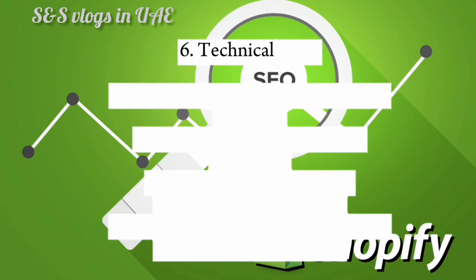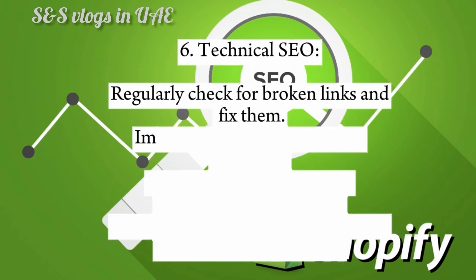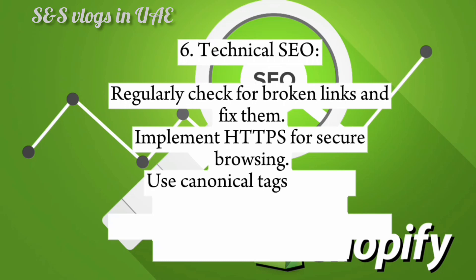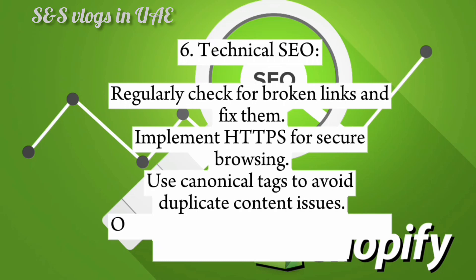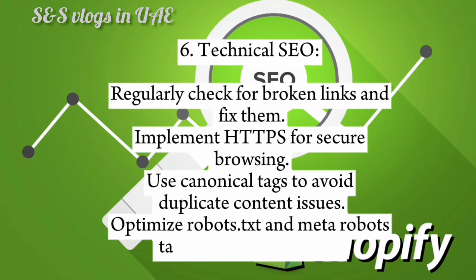6. Technical SEO. Regularly check for broken links and fix them. Implement HTTPS for secure browsing. Use canonical tags to avoid duplicate content issues. Optimize robots.txt and meta robots tags for proper indexing.